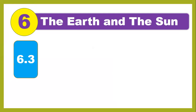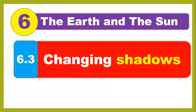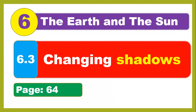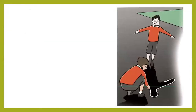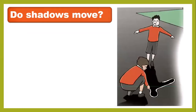This is the third lesson from Unit 6, Changing Shadows. You need to open pages 64 to 65. Today you will learn: Do shadows move? In the previous lesson we talked about shadows and their properties.